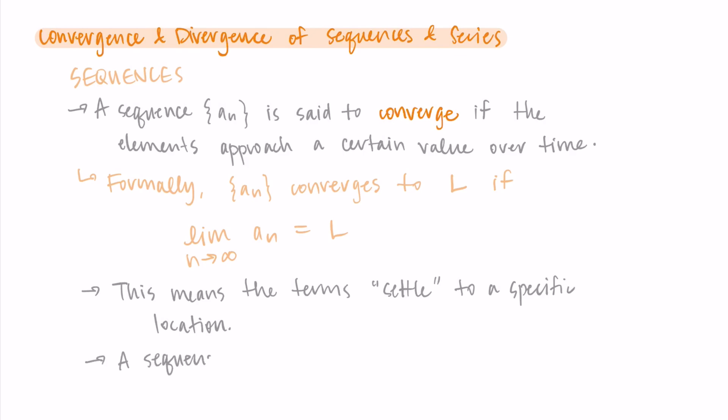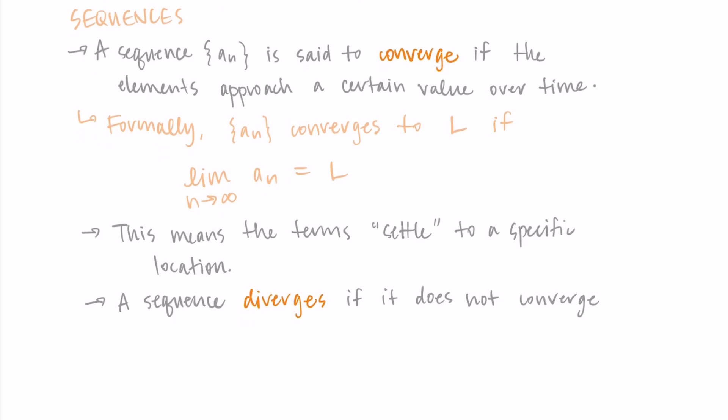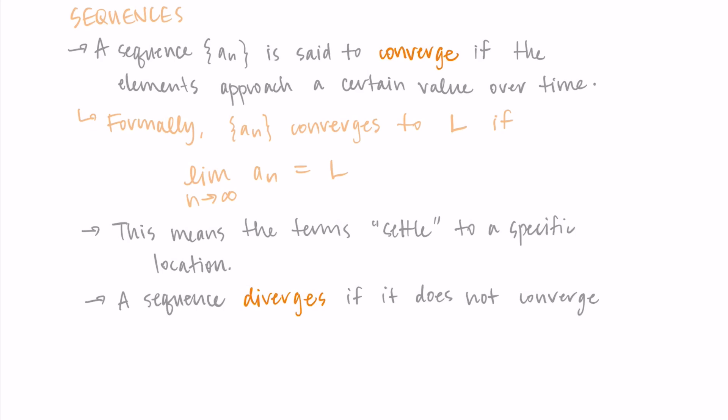Alternatively, we say a sequence diverges if it does not converge. So if it's just growing without bound, growing and growing, the terms are getting more and more negative, then it doesn't converge. Anytime it doesn't have that sort of settling point, we say the sequence diverges.